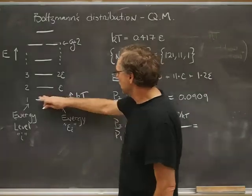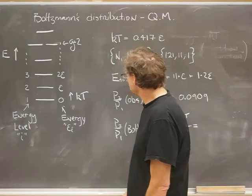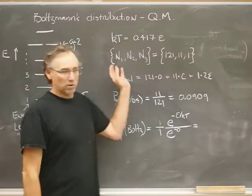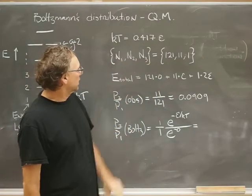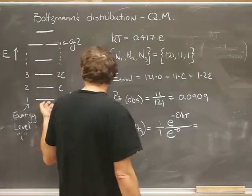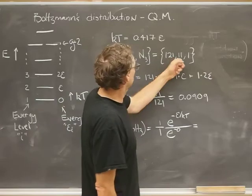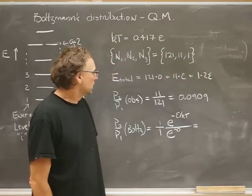It looks like most of the molecules will be in this state, a few will be in that one, and even fewer upstairs. That looks more or less consistent with this picture here. I've given an occupation set here—the number of molecules in the ground state is 121, then in the second state we have 11, and the third state we have 1.